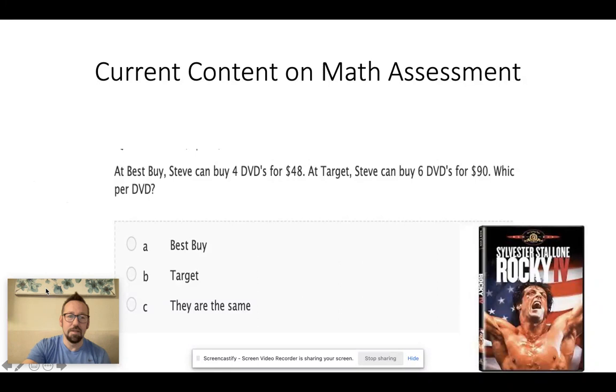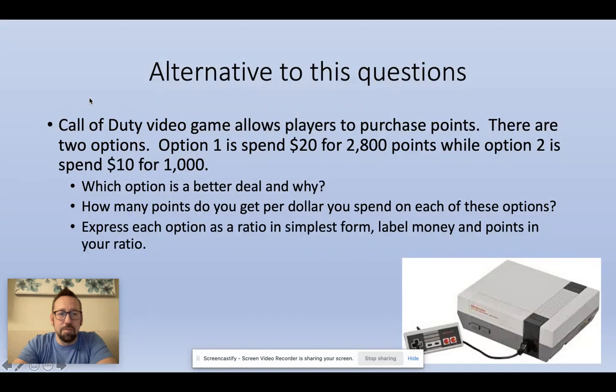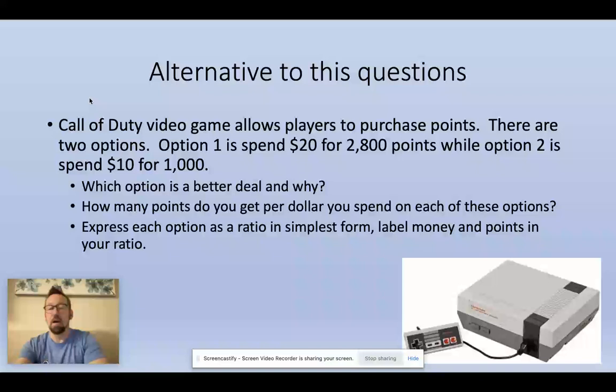Instead — now Call of Duty has some questionable appropriateness depending on the age, but I'm coming at this from a perspective of things I know kids play. Call of Duty video game allows players to purchase points. There are two options: option one is to spend $20 for 2,800 points, while option two is to spend $10 for 1,000 points. We could ask this question on an exam or summative assessment. We could also include this in the units so kids are engaged. Some of my quietest kids really come out of their shells when you talk about what they're interested in. A lot of kids play video games.